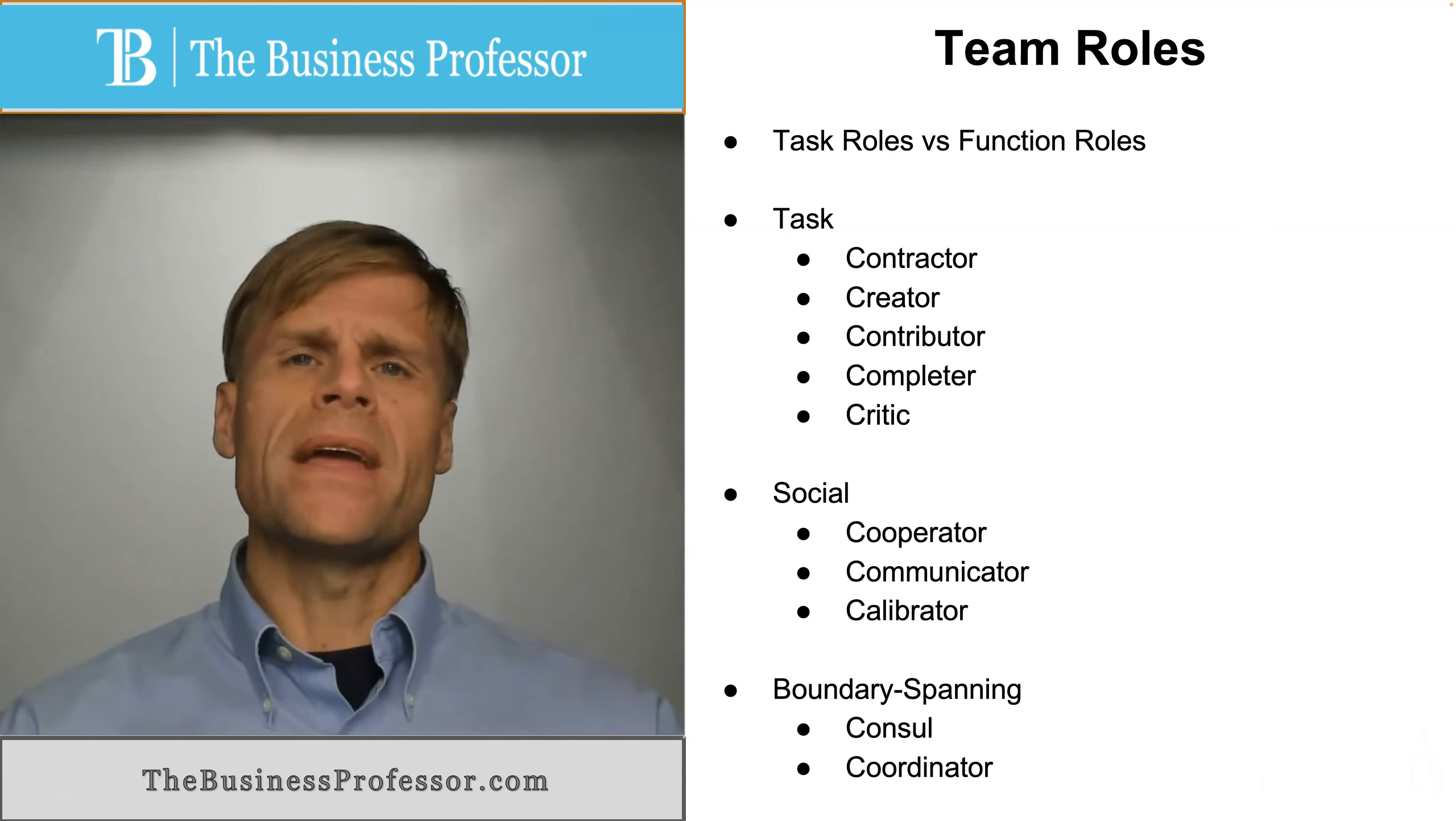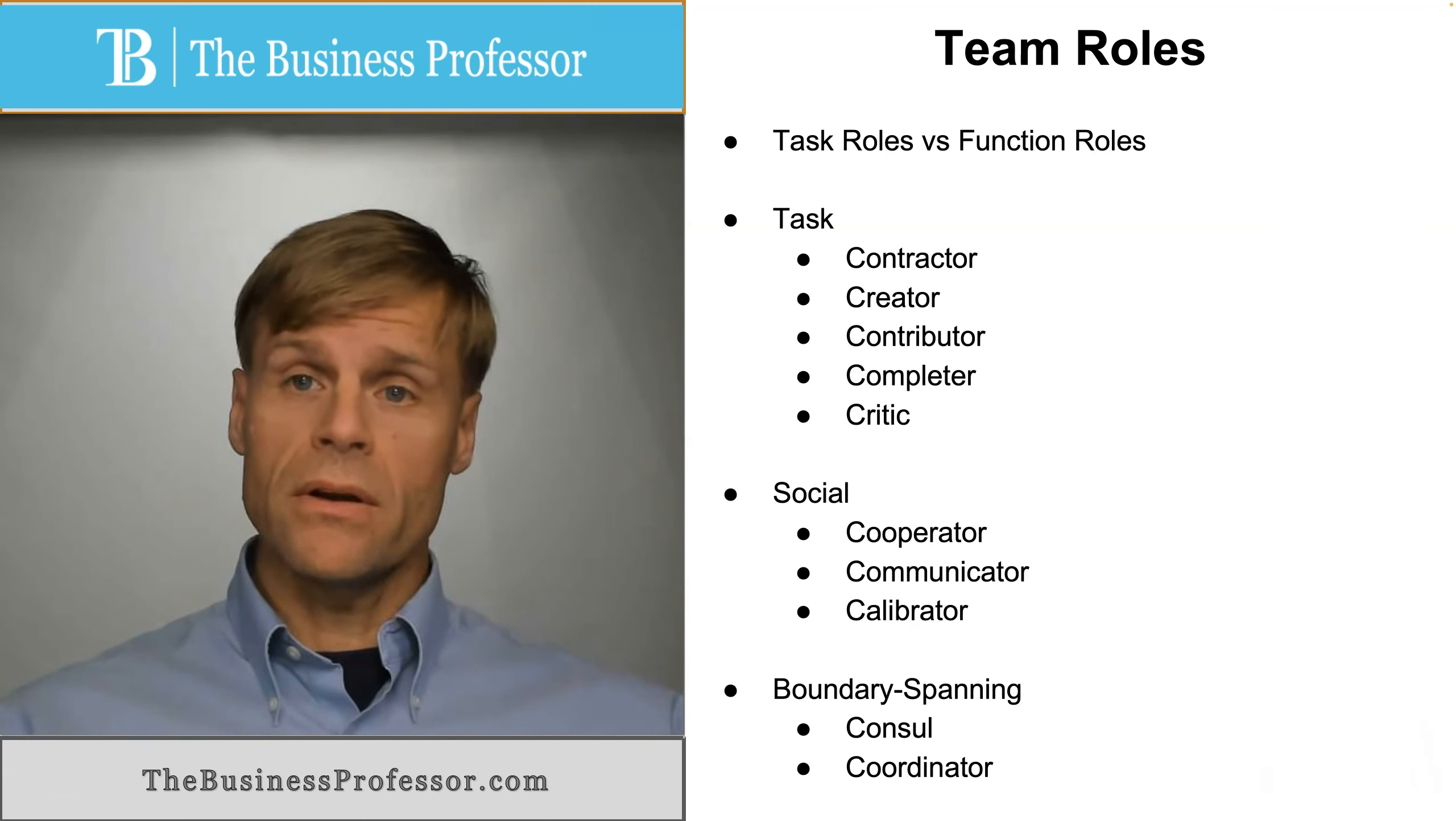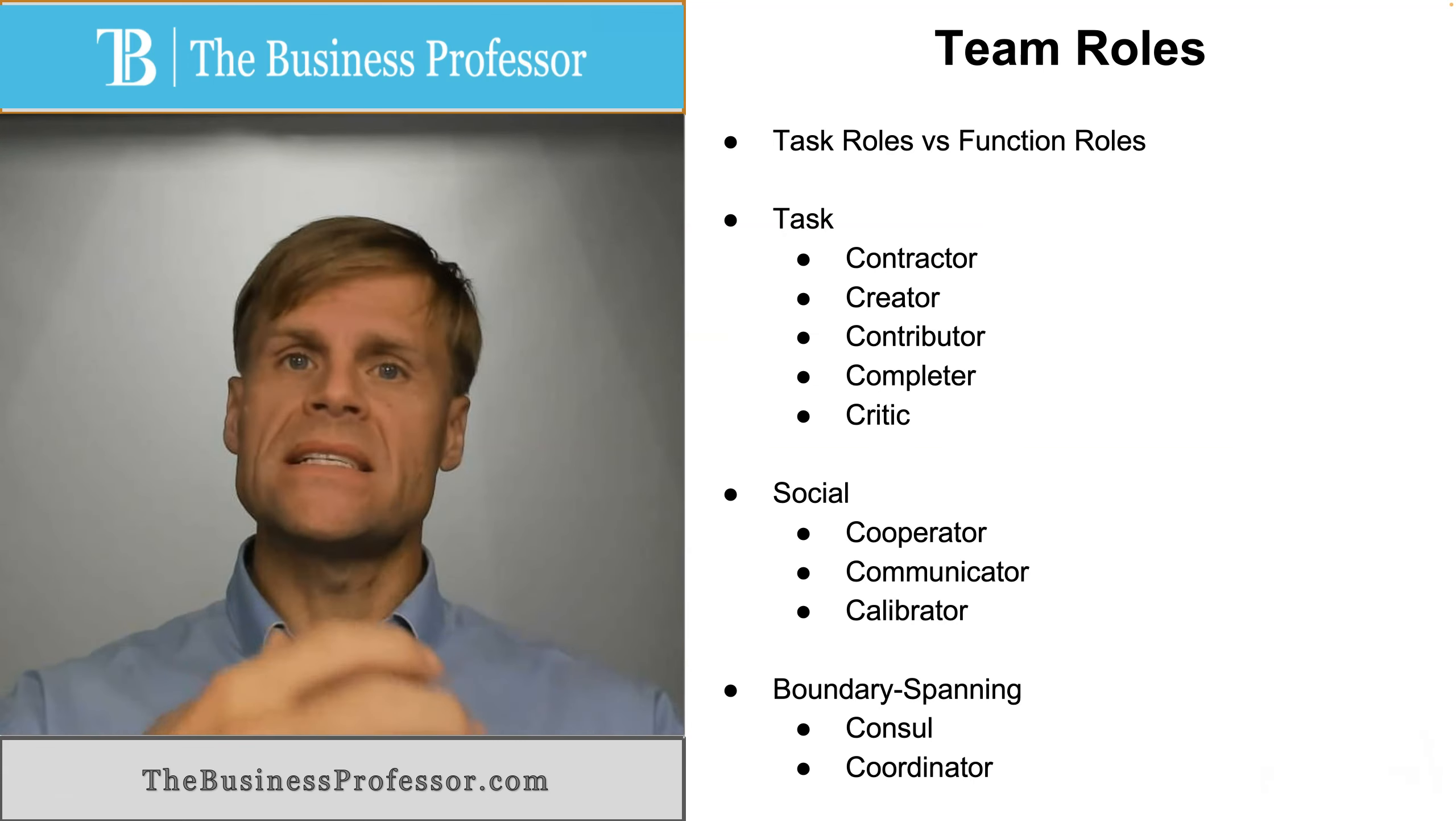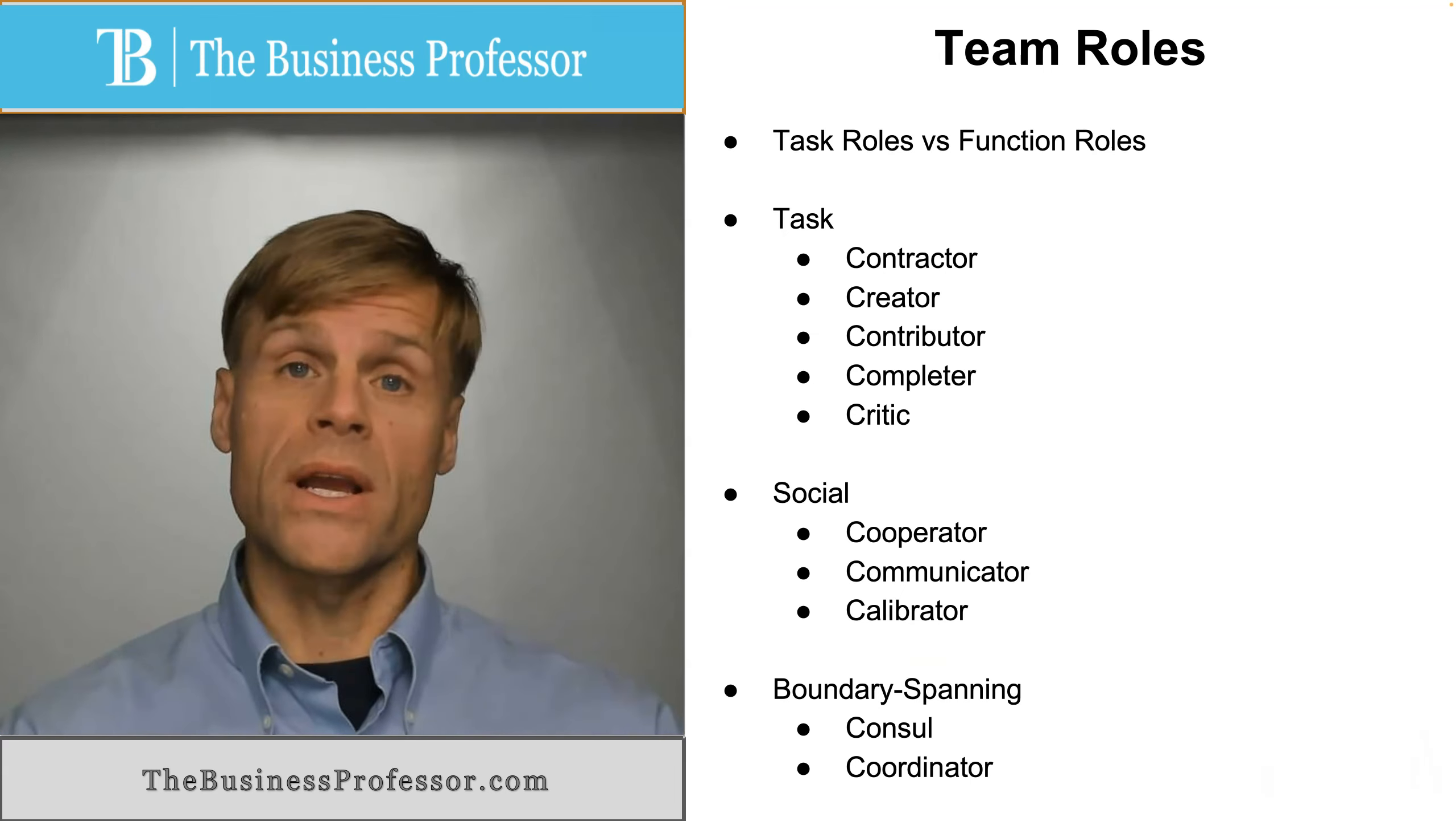And then boundary-spanning roles focus on the communication of information between the group or team and the larger organization and the team itself. So the consul role will focus on this internal and external communication between the larger organization and the team. The coordinator function will focus on communications between similar teams throughout the organization to make sure everyone's working collectively together towards a common goal or purpose. So these are the general roles identified for teams within an organization.